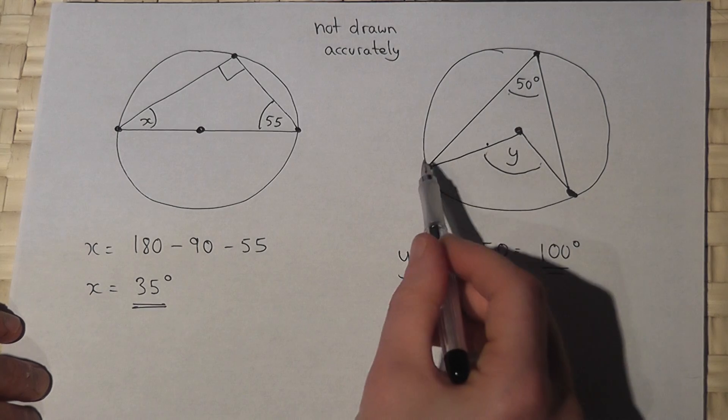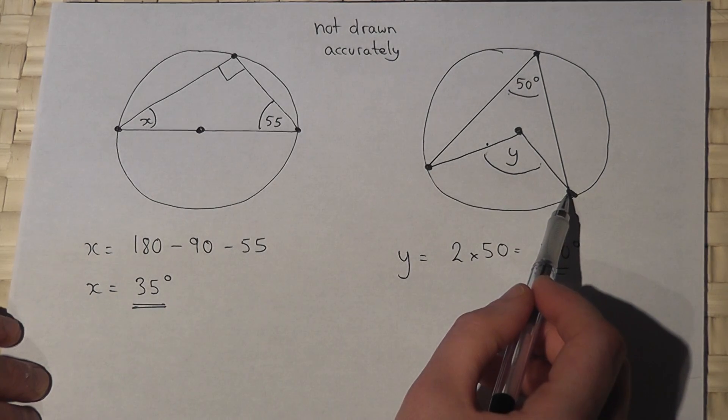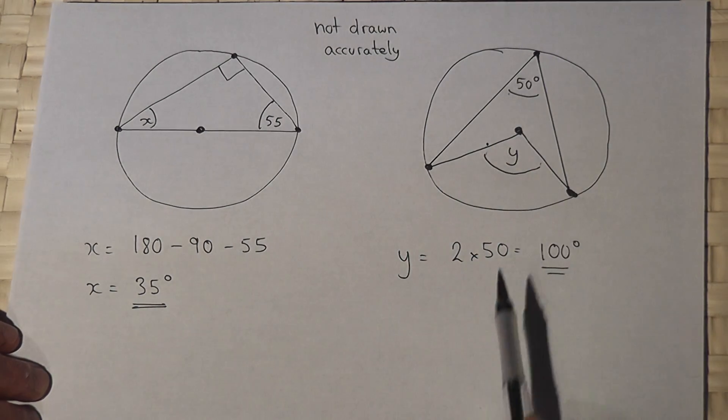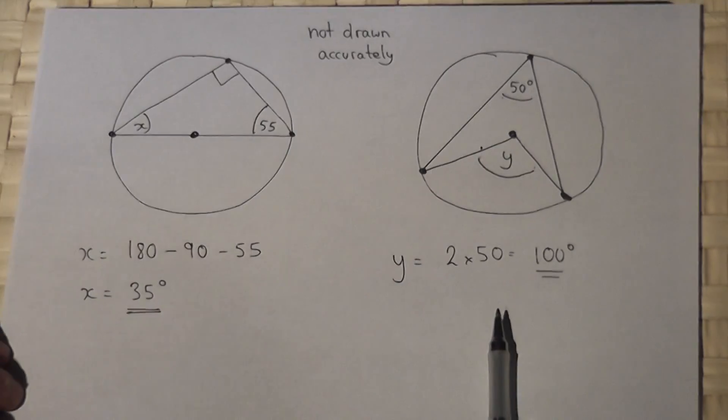So again, the angle at the centre is always double the angle at the circumference.